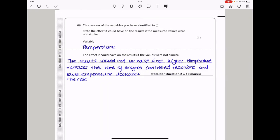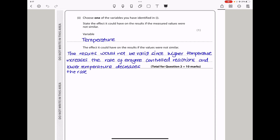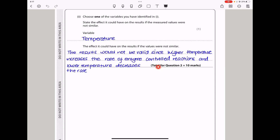Then they say choose one of the variables you have identified and state the effect it could have on the results if the measured values were not similar. The variable I chose was temperature, and the effect this could have is the results will not be valid since higher temperature or lower temperature has a way it affects enzymes. Sometimes higher temperature causes enzyme-controlled reactions to be faster, while lower temperature decreases the rate of reaction. And sometimes if the temperature increases beyond the optimum temperature, there is going to be denaturation of the enzymes. This brings us to the end of question 2.